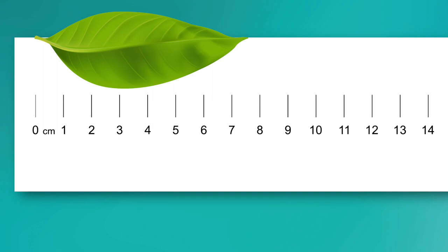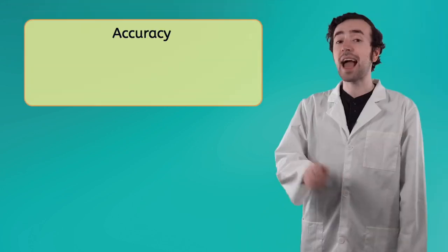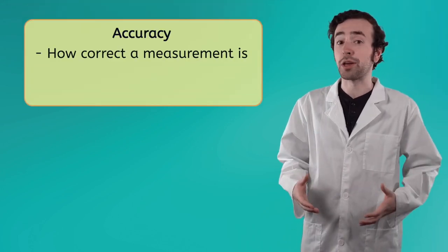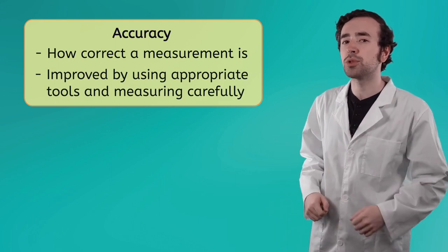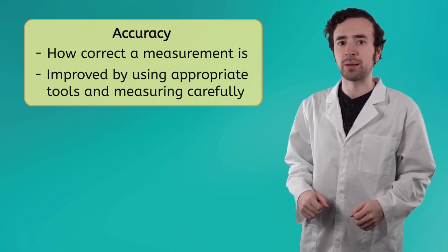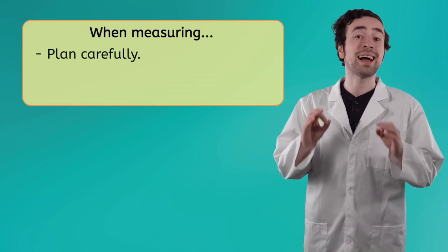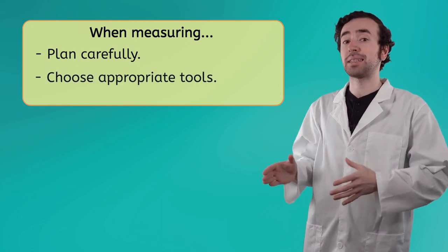Accuracy refers to how correct our measurement is. We can always improve our accuracy by using the best available tools for our measurements and by measuring extremely carefully. Without accurate measurements, our investigations just aren't that useful. So whenever your investigation calls for some measurements, plan ahead. What's the best tool for the job?